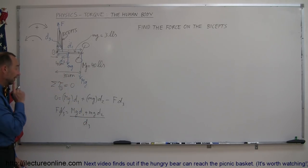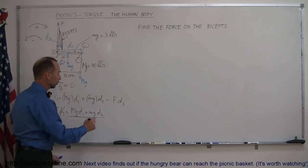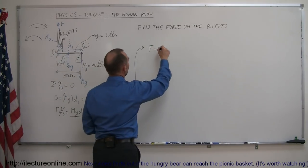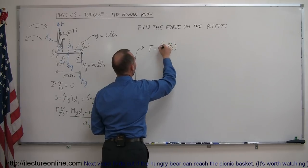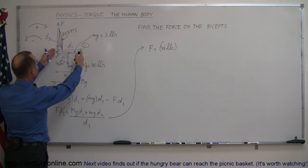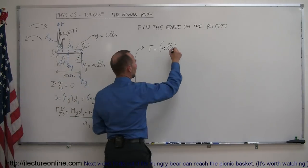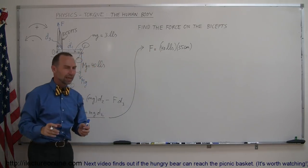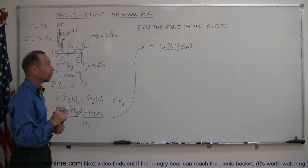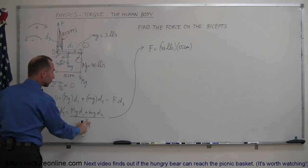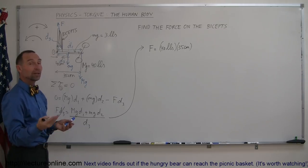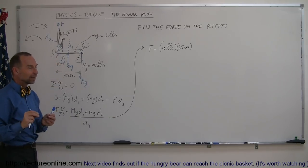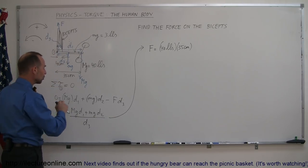We of course need to plug in what these numbers are equal to. The force is equal to the weight of the barbells which is 40 pounds times the distance D1 and that would be the entire distance of 35 centimeters. Now you may say wait a minute why am I mixing pounds and centimeters, you can't do that. Well in a way we can because eventually since we're going to divide the right side by D3 the units of centimeters will disappear and we're simply left with pounds which is the unit for force. So we can actually do that, just make sure the units properly cancel out.